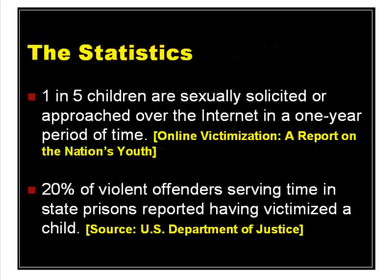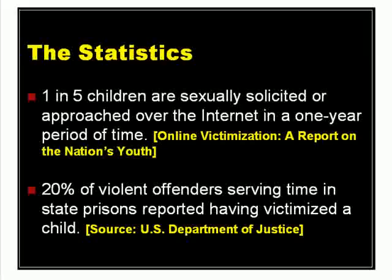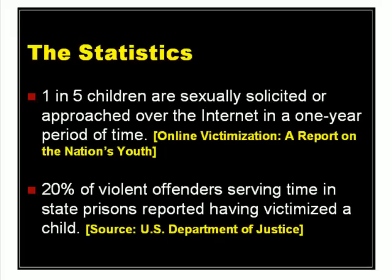Let's look at some of the statistics. There is a statistic that you may have seen before, which is that one in five children are sexually solicited or approached over the internet within a one-year period of time. This report is available online at the National Center for Missing and Exploited Children. That particular statistic is from a survey done about five years ago, so this trend is certainly moving upwards. We have also seen statistics from other groups indicating it is much more frequent than one in five. Twenty percent of violent offenders serving time in state prisons reported having victimized a child. We really have an epidemic as the internet becomes more common and kids get on it at an earlier age. In a bit, I'll talk about a case study where we went online and posed as a 13-year-old girl to see how long it took before we were solicited.